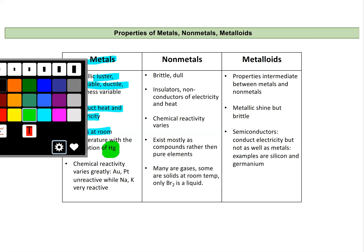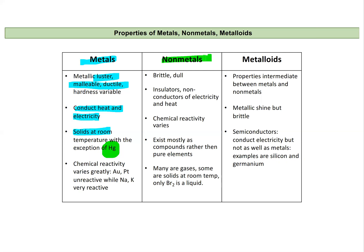Then we have our nonmetals. These are the ones that were yellow in the previous slide. They're typically dull and brittle. They don't conduct electricity and heat. They're insulators. Their chemical reactivity also varies. And a lot of these are going to exist as compounds rather than pure elements. So we don't find them as a pure element as often. And a lot of these are actually gases. An exception to this, some are solids. And only bromine is actually a liquid at room temperature.